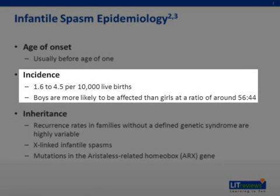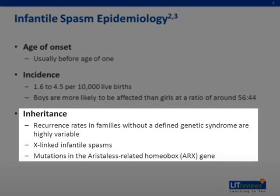The incidence of infantile spasms is 1.6 to 4.5 per 10,000 live births. Inheritance patterns are highly variable and depend on the underlying cause. There are certain established infantile spasm genetic patterns, including X-linked infantile spasms. Mutations in the aristolase-related homeobox ARX gene are associated with the familial syndrome of IS, severe mental retardation, and subsequent epilepsy.